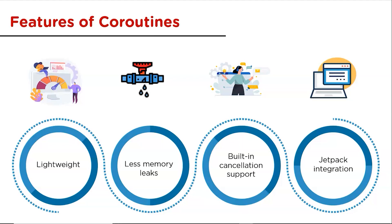The third feature is built-in cancellation support. Cancellation in coroutines is cooperative — in order to be cancelable, a coroutine must be cooperative; otherwise it will wait to finish. There are two ways to make a coroutine cancelable: one is through suspending functions from kotlin.coroutines like delay and yield, and the second is using the CoroutineScope.isActive boolean flag.